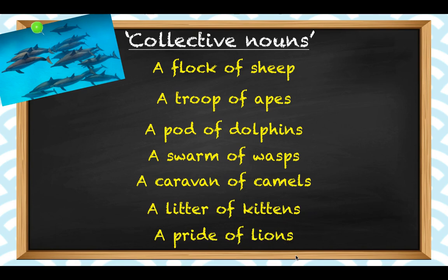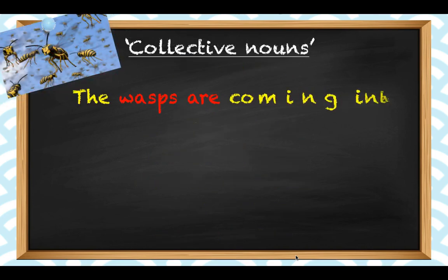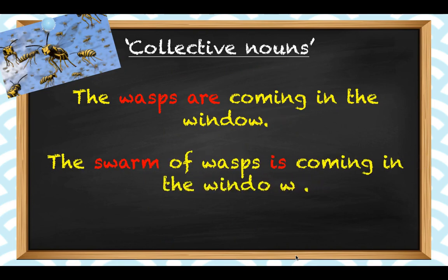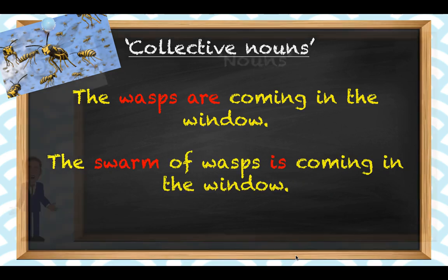But remember, although the noun refers to more than one animal, one sheep doesn't make a flock. The noun itself is singular. So while we might say 'the wasps are coming in the window,' we would have to say 'the swarm of wasps is coming in the window.'